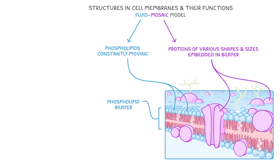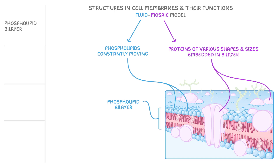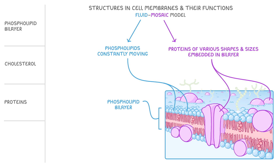The main components we find in the cell membrane are the phospholipid bilayer, which contains cholesterol molecules, but also the embedded proteins, glycoproteins and glycolipids.